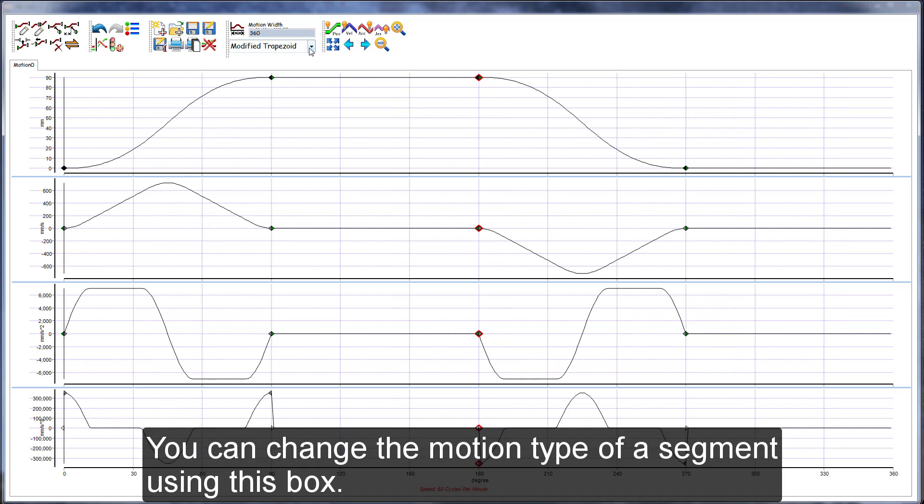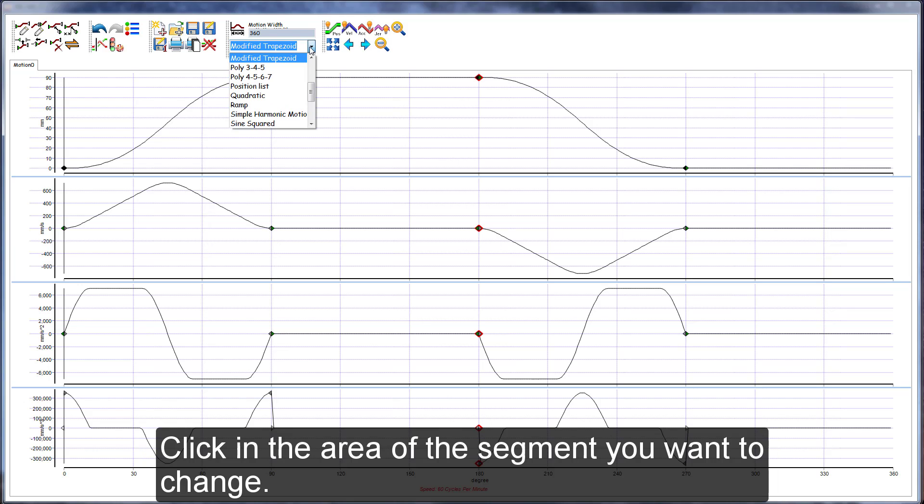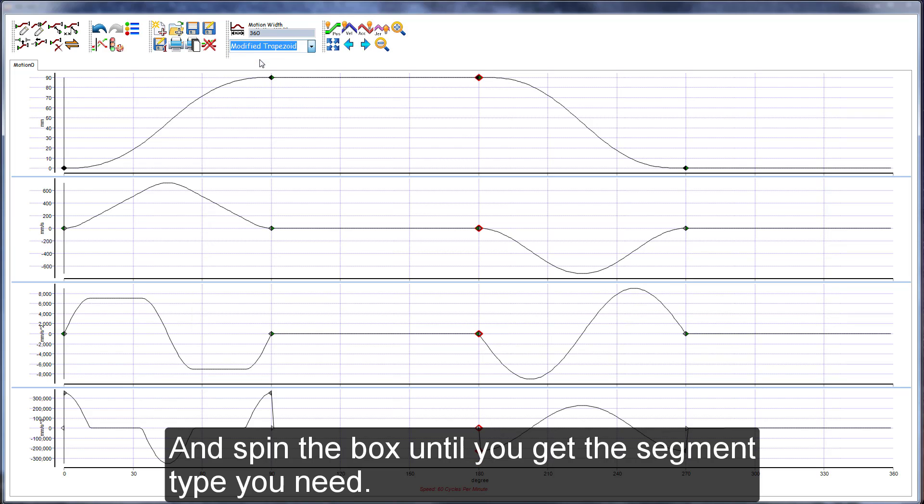You can change the motion type of the segment using this box. Click in the area of the segment you want to change and spin the box until you get the motion you need.